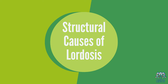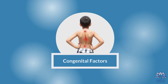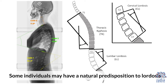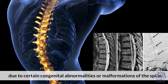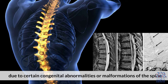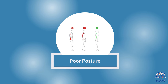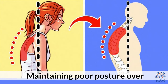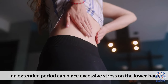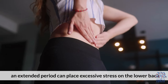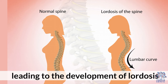Structural Causes of Lordosis. 1. Congenital Factors: Some individuals may have a natural predisposition to lordosis due to certain congenital abnormalities or malformations of the spine. 2. Poor Posture: Maintaining poor posture over an extended period can place excessive stress on the lower back, leading to the development of lordosis.